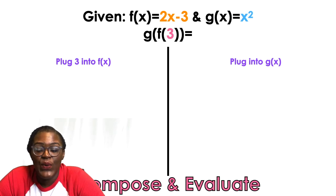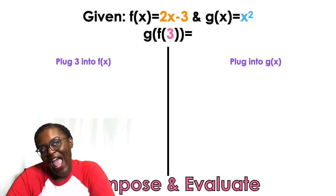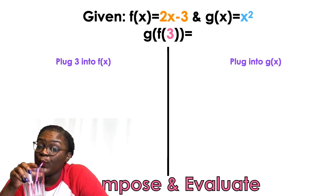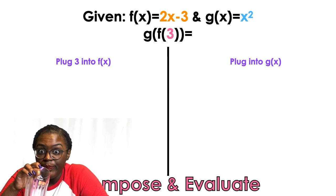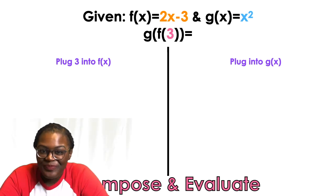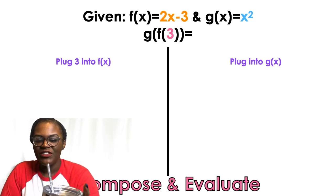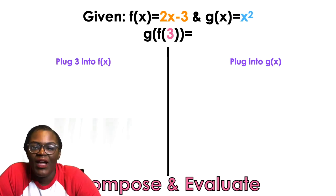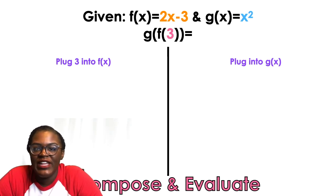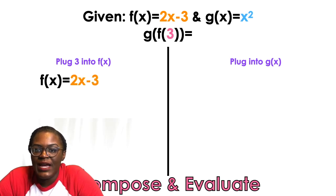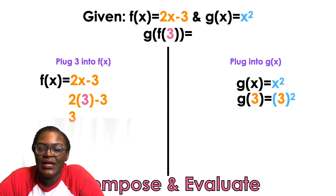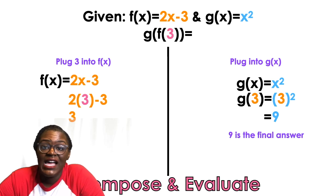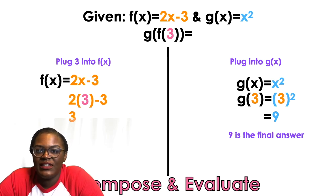Now try G of F of 3. Plug 3 into F first: 2 times 3 is 6, minus 3 is 3. Now take that 3 and plug it into G: 3 squared is 9. So the final answer is 9.